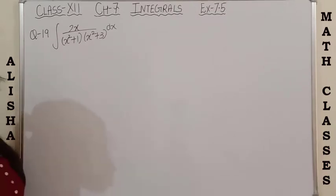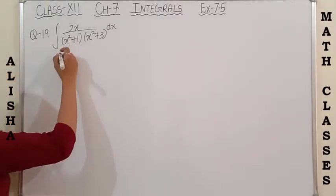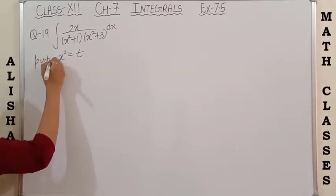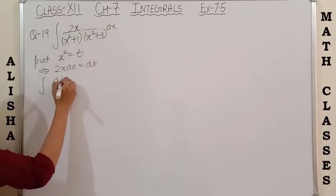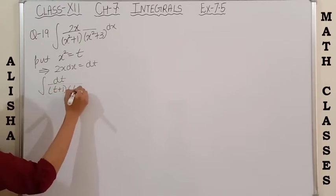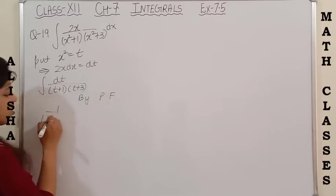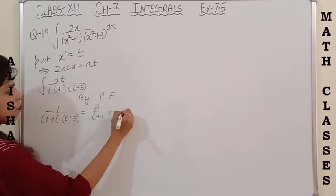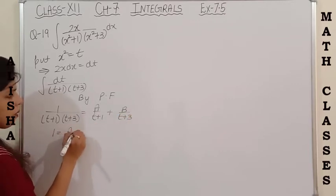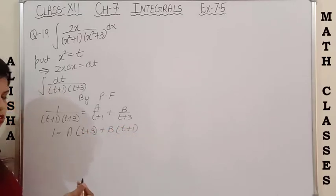Question number 19 is the integration of 2x upon (x²+1)(x²+3). First, check whether we have a function and its derivative — yes! x² is the function, so we put x² = t. Differentiating, 2x dx = dt, which is already in the numerator. So the integral becomes dt upon (t+1)(t+3). Using partial fractions, we write: A upon (t+1) plus B upon (t+3), and cross-multiplying gives A(t+3) + B(t+1).